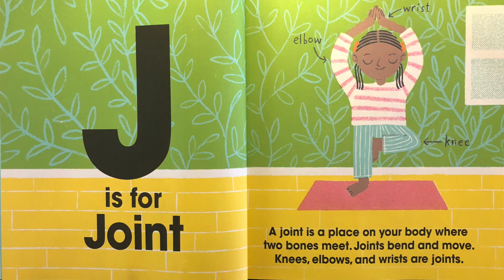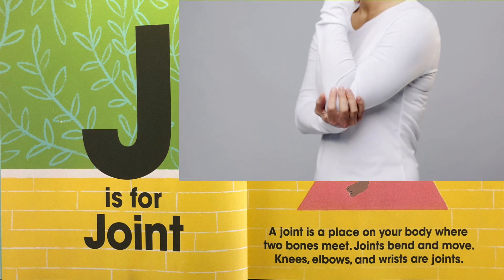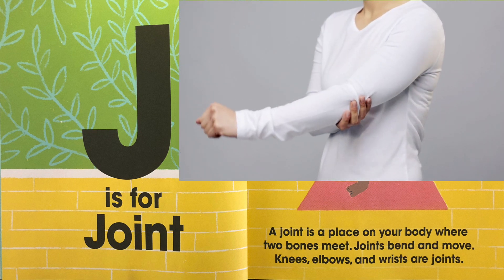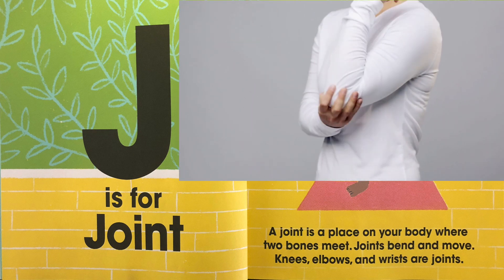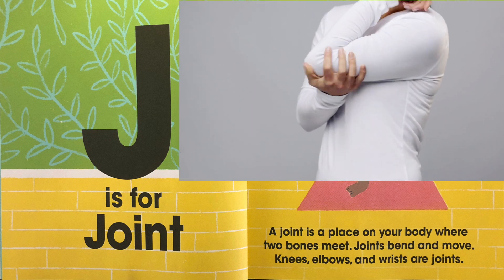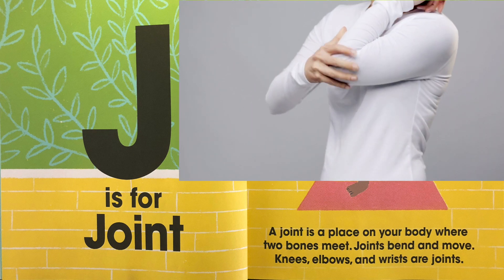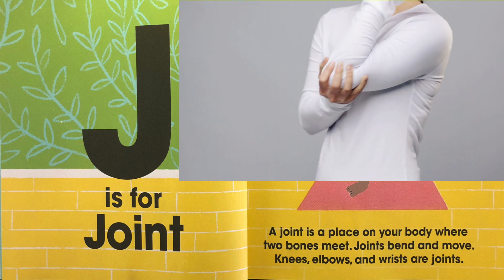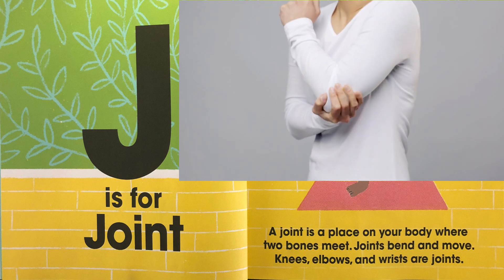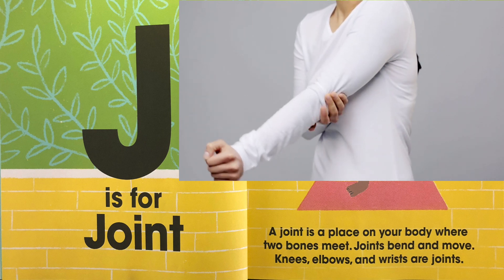J is for joint. A joint is a place on your body where two bones meet. Joints bend and move. Knees, elbows and wrists are joints.